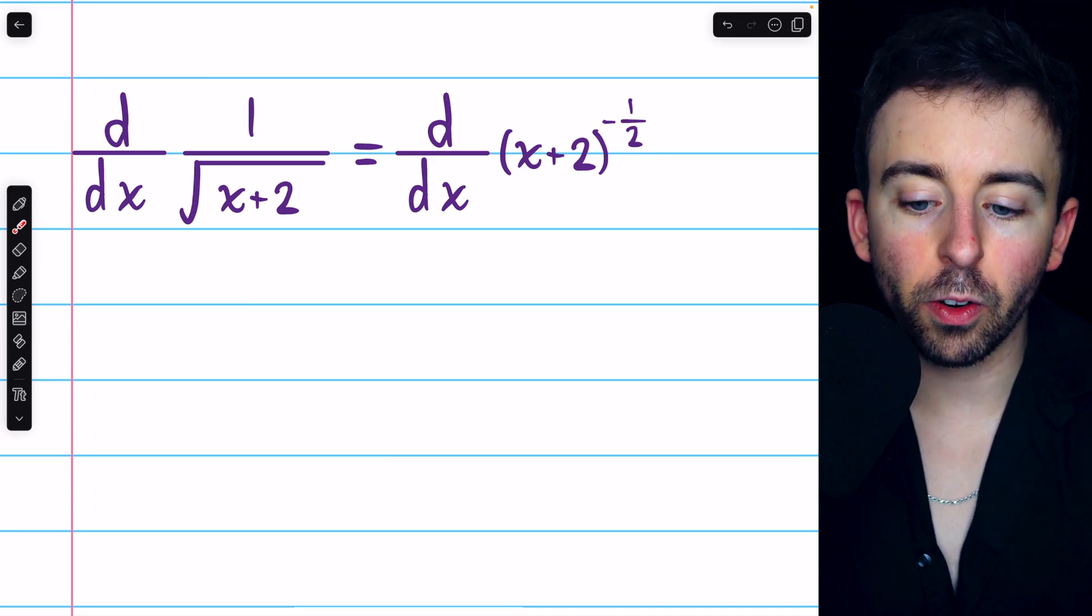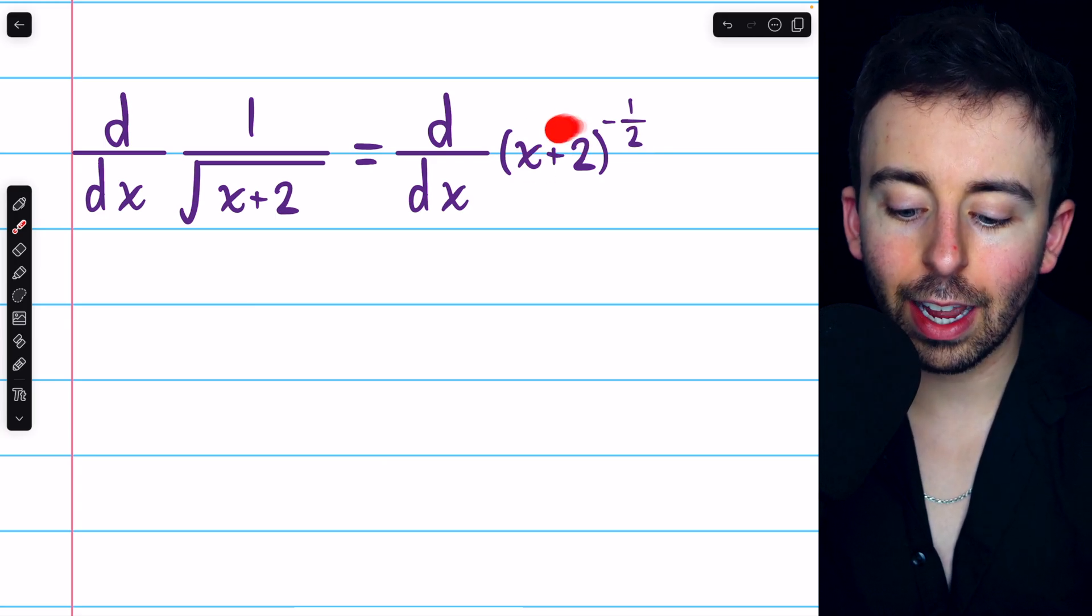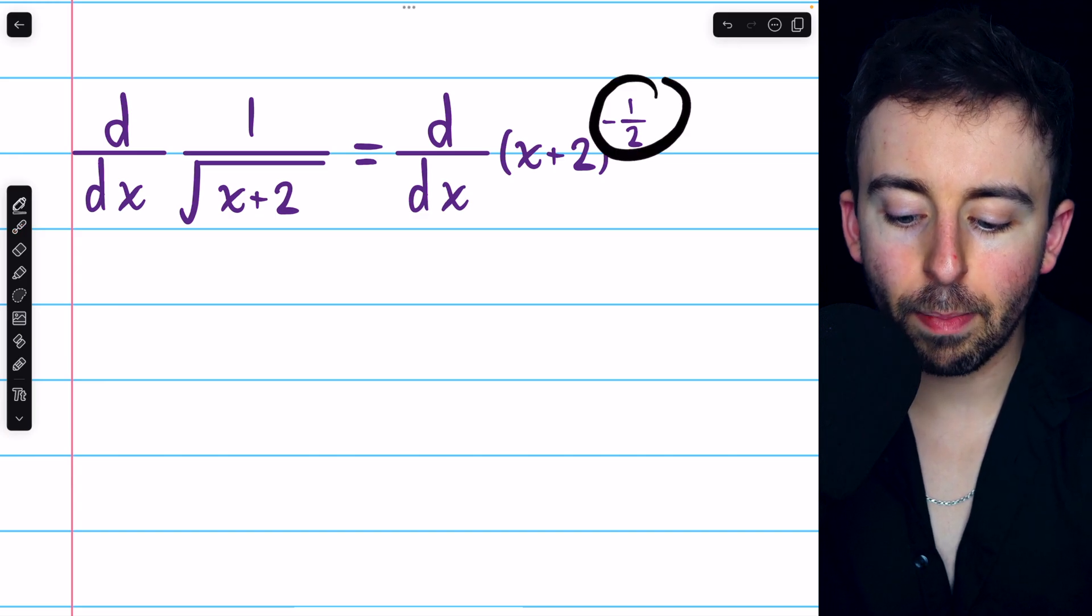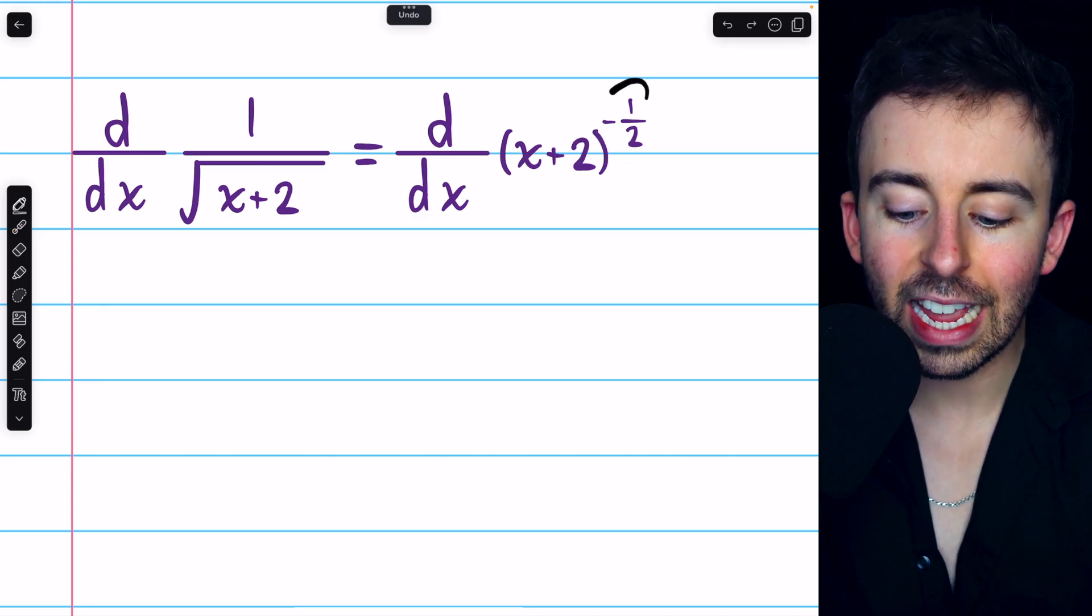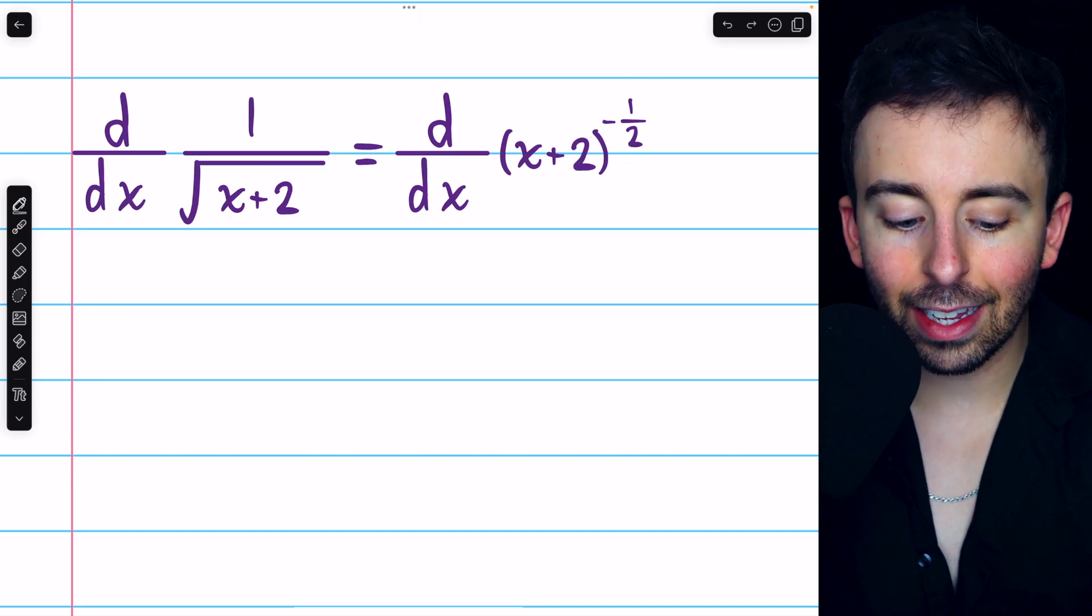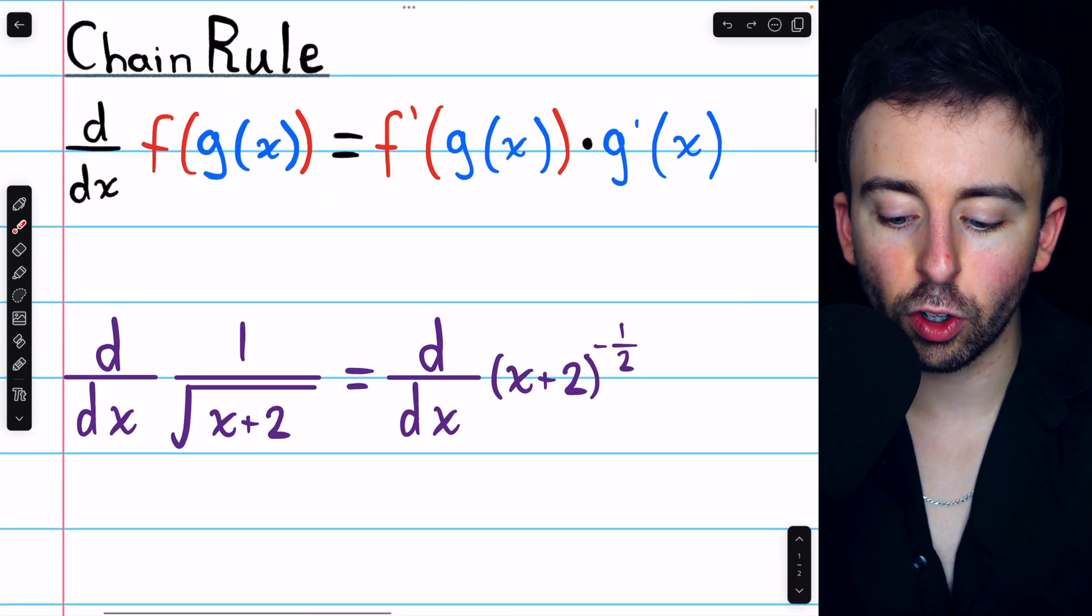Now, this is a composite function. It's the linear function, x plus 2, to this power. So, it's a function in a function. To take its derivative, we want to use the chain rule,